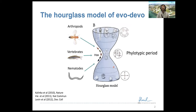The title says the Hourglass. What is the Hourglass model of EvoDevo? Simply put, it is the observation that in mid-development there is a developmental period where embryos of different species look much more similar than earlier or later embryonic periods. This period is called the phylotypic period because typically the embryos look most similar within a phylum, such as among vertebrates, among arthropods, or among nematodes.